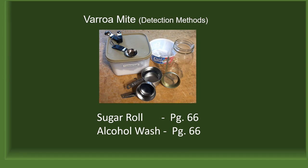The second method is the sugar roll, which uses powdered sugar to cover the bees, forcing them to clean themselves and dislodging the mites. This is an effective way to get a mite count without killing the bees. The third and final way is similar to the sugar roll except it uses ether or alcohol. The ether roll is highly effective but the tested bees will die. You can read about both of these methods on page 66 in your manual.